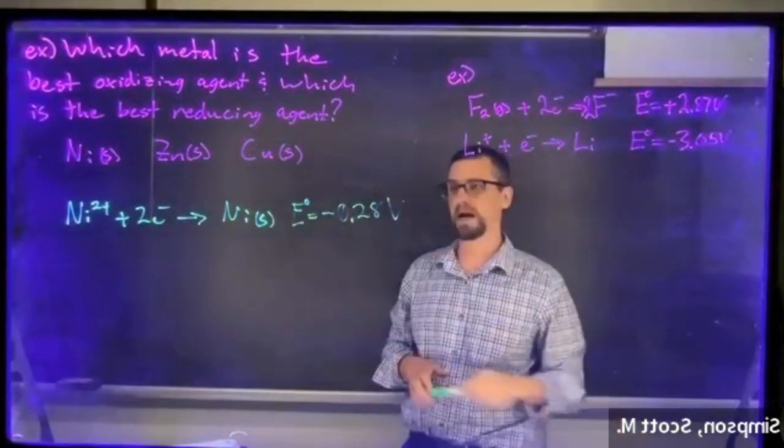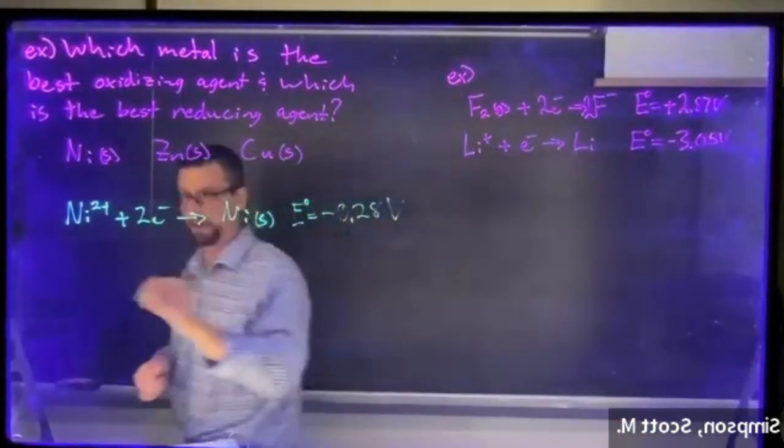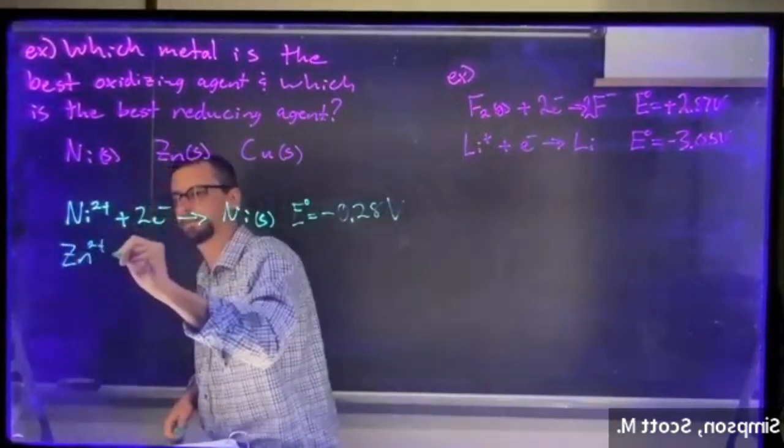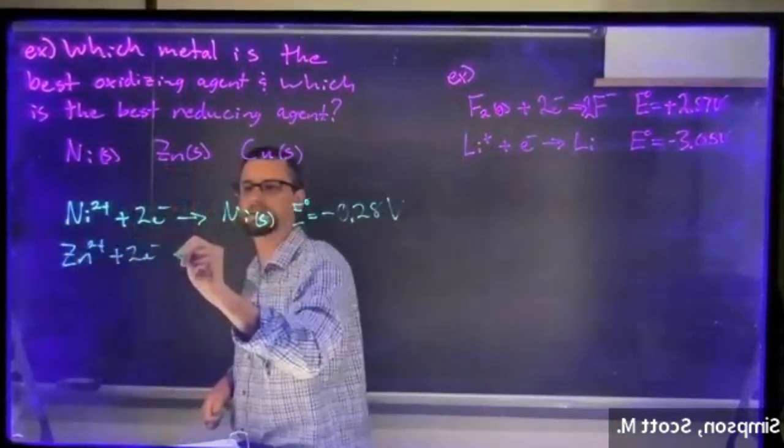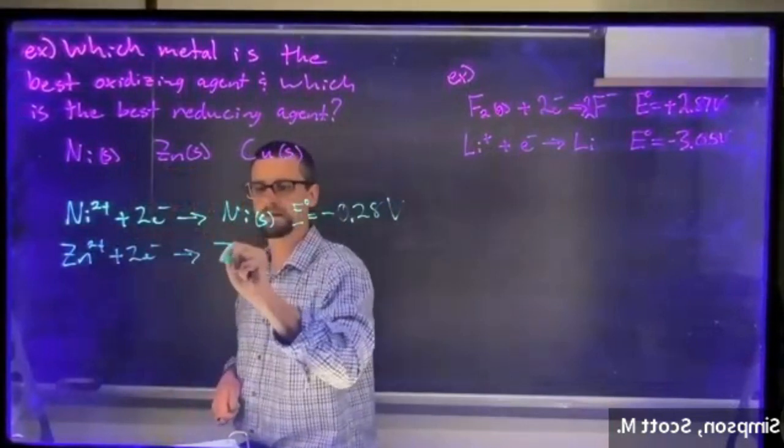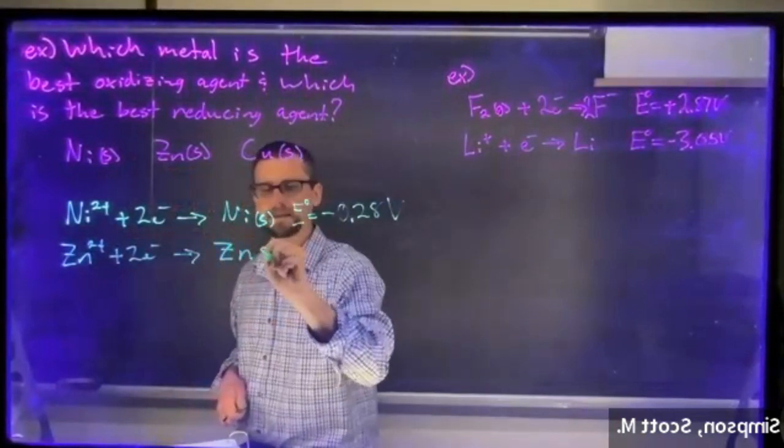Then we have zinc 2+ plus two electrons gets us zinc solid. Standard reduction potential for that is negative 0.76 volts.